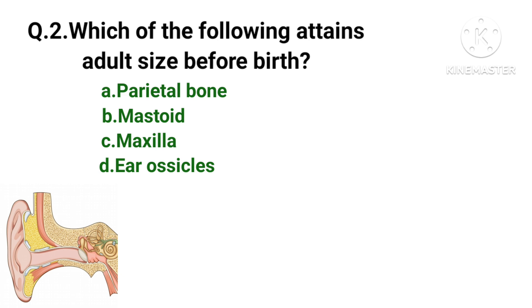Which of the following accounts ossicle size before birth: temporal bone, ethmoid, maxilla, or ear ossicles? Ear ossicles attain adult size before birth.